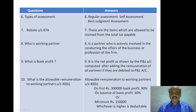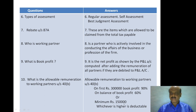The rules under Section 40B are: on the first 3 lakh rupees of book profit, 90% is allowed; on the balance of book profit, 60% is allowed. The minimum allowable amount is Rs. 1,50,000. The amount so arrived at is the deductible remuneration under Section 40B.